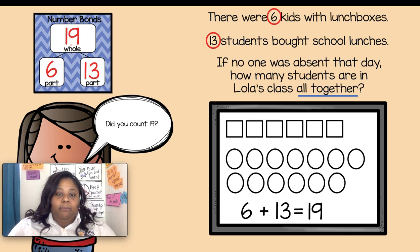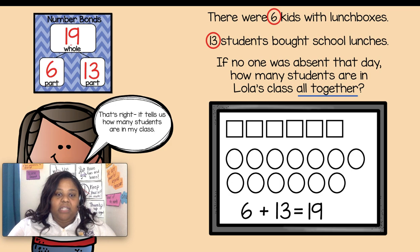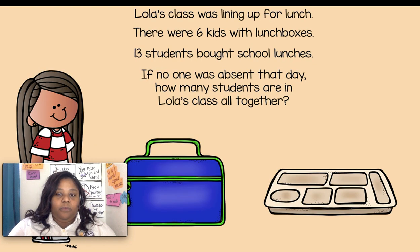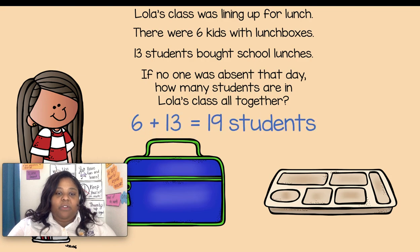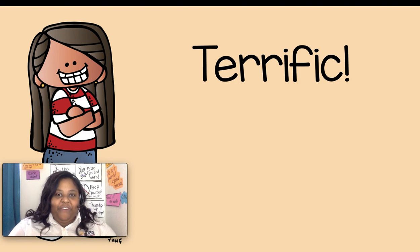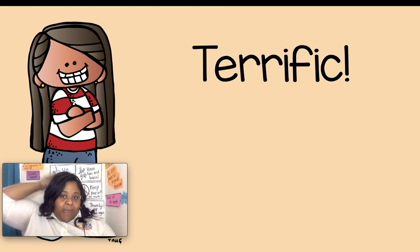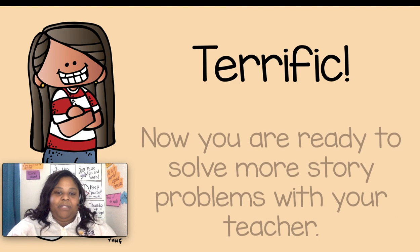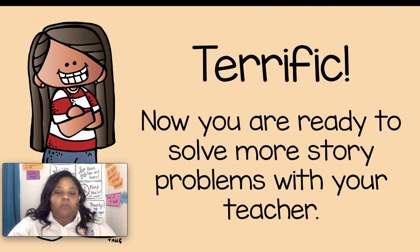Great job — me too! Now what does the number 19 tell us? It tells us how many students are in the class. Let's go back to our story problem: 6 plus 13 equals 19 students. Terrific, first grade — give yourselves a pat on the back. Great job today. Now you are ready to solve more story problems with your teacher.